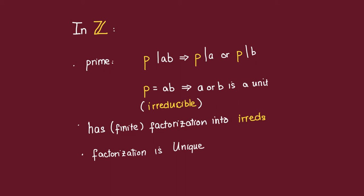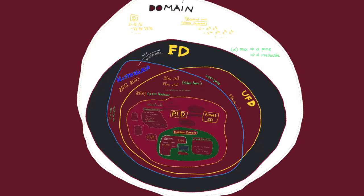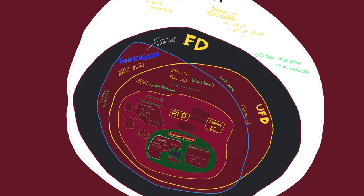Recall that in the integers we characterize primes in two equivalent ways. For a general domain, elements satisfying the first characterization are called primes, and elements satisfying the second are called irreducibles, and they're not always the same thing.